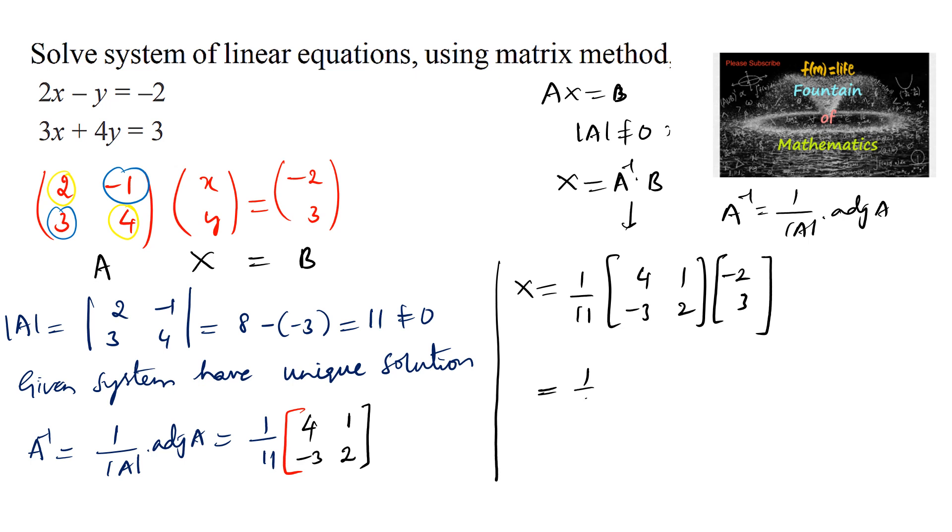Which is equal to 1 upon 11 times row with column. So first row is multiplied with the first column. 4 into negative 2 is negative 8 plus 1 into 3 is plus 3, and second row with first column, minus 3 into minus 2 is 6 plus 2 into 3 is 6. We can write negative 8 plus 3 is negative 5, and 6 plus 6 is 12.